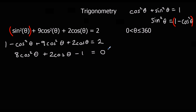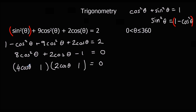Now we've got a standard quadratic equation. We could use the quadratic formula, factorise, or complete the square. I'm going to factorise. The factorisation gives cosθ = 1/4 (making the first bracket zero) or cosθ = −1/2 (making the second bracket zero).